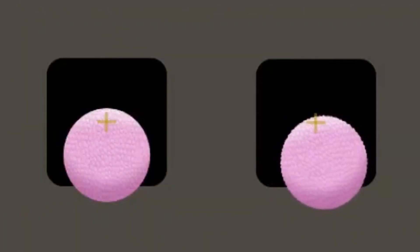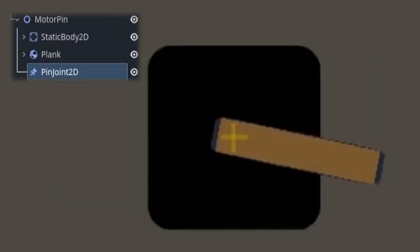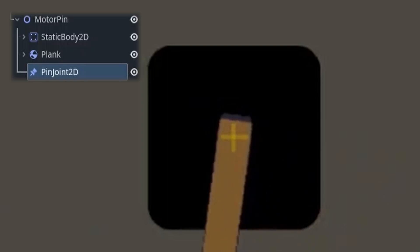Pin joints are used to connect two physics bodies and the joint acts as an anchor point. You can also make the joint rotate as a motor.